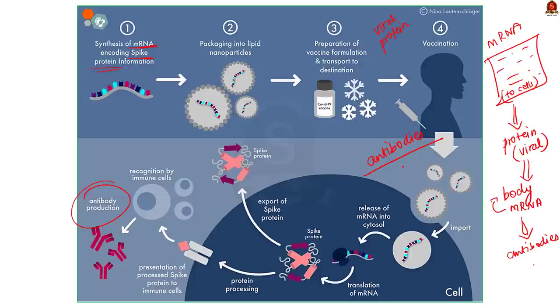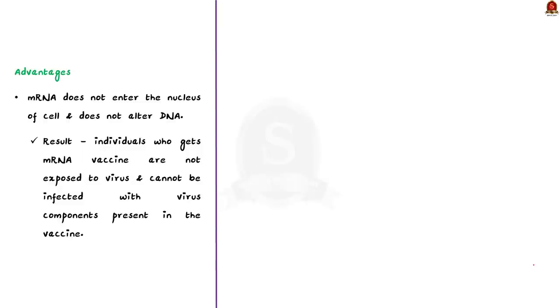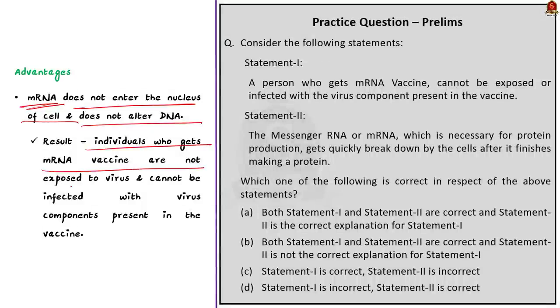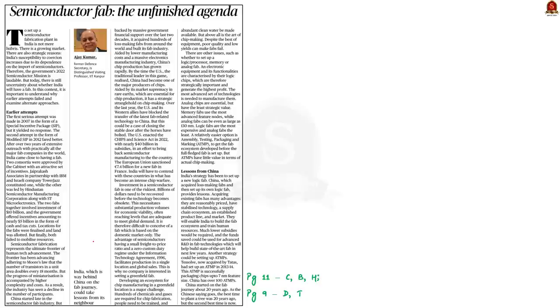Once the cells produce protein with the help of mRNA, the cells then break down the mRNA. So mRNA does not enter the nucleus of the cell and it does not alter the DNA. Because of this advantage, the individuals who get an mRNA vaccine are not exposed to the virus and they cannot be infected with the virus. Now we will move on to the next article discussion.